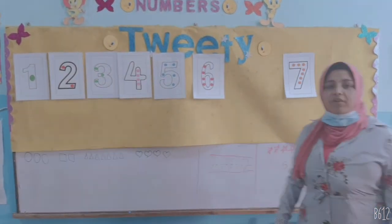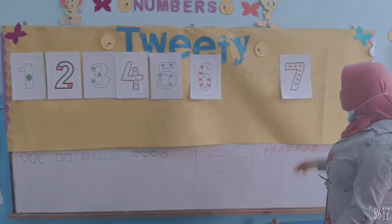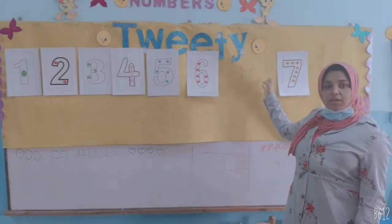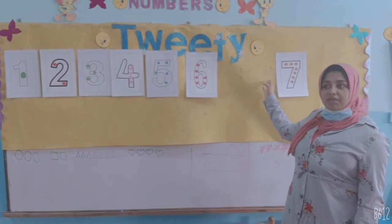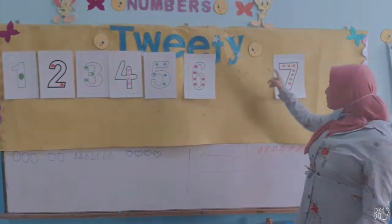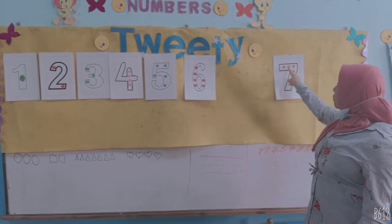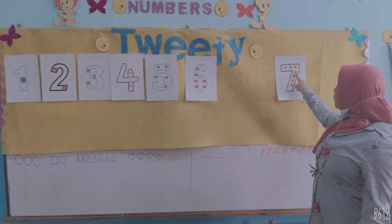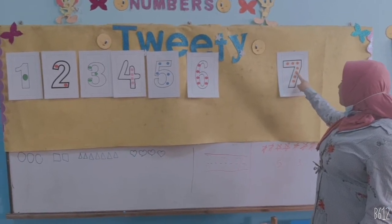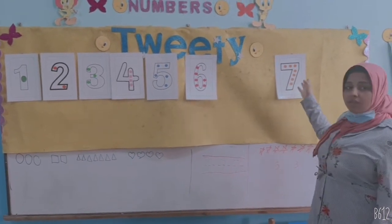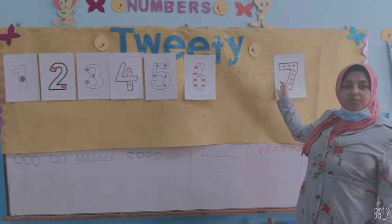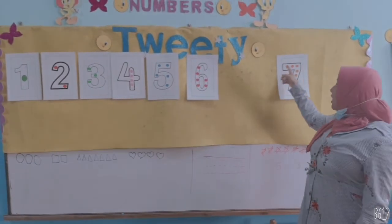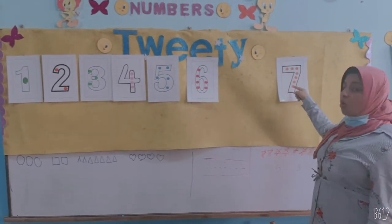And today we have a new number. What is number? 7. Count to me: 1, 2, 3, 4, 5, 6, 7. This is number 7. What color is that? Orange.